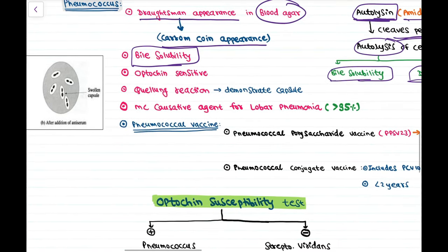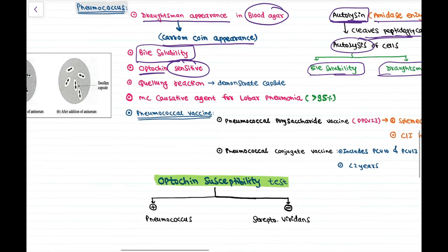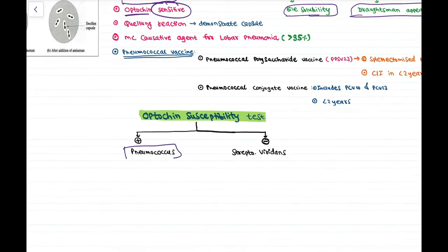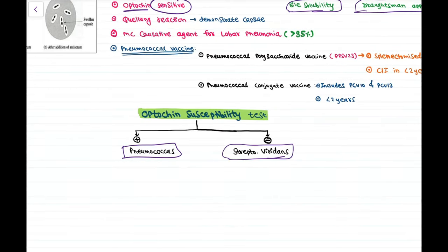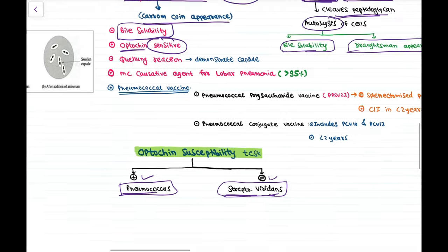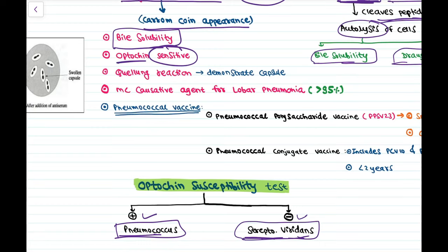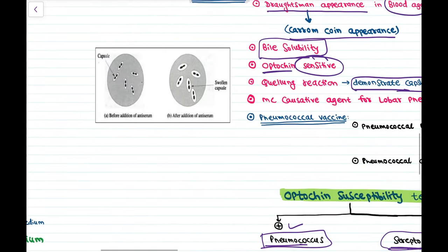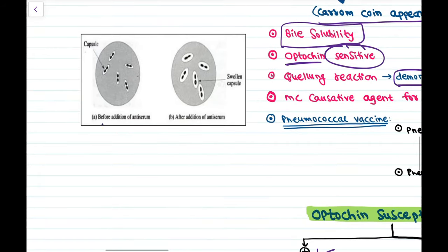Pneumococcus is optochin sensitive, while Streptococcus viridans is optochin resistant — this test differentiates the two. The Quellung reaction is used to demonstrate the capsule of Pneumococcus: before addition of antiserum the capsule is small, and after addition it swells up visibly.